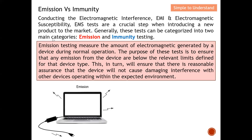Let's start with emission. Emission testing measures the amount of electromagnetic energy generated by a device during normal operation. For example, with a laptop set under normal operation, emission testing measures the amount of electromagnetic wave released by that device. The purpose of this test is to ensure that any emissions from the device are below the relevant limit defined for that device type.